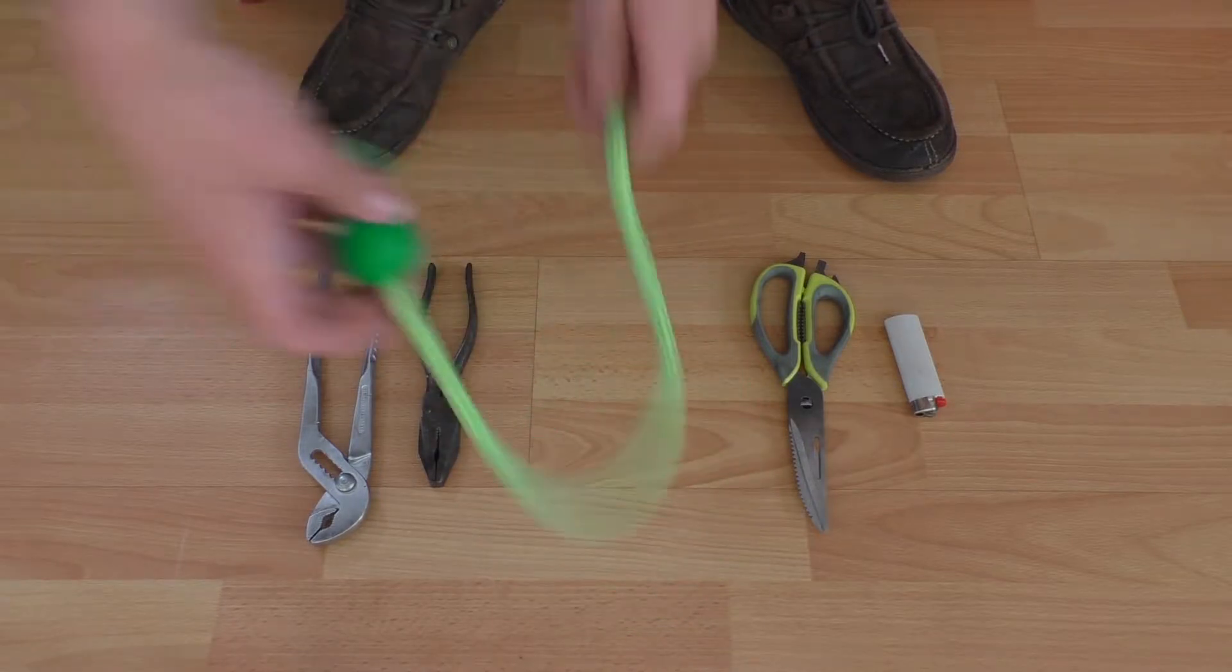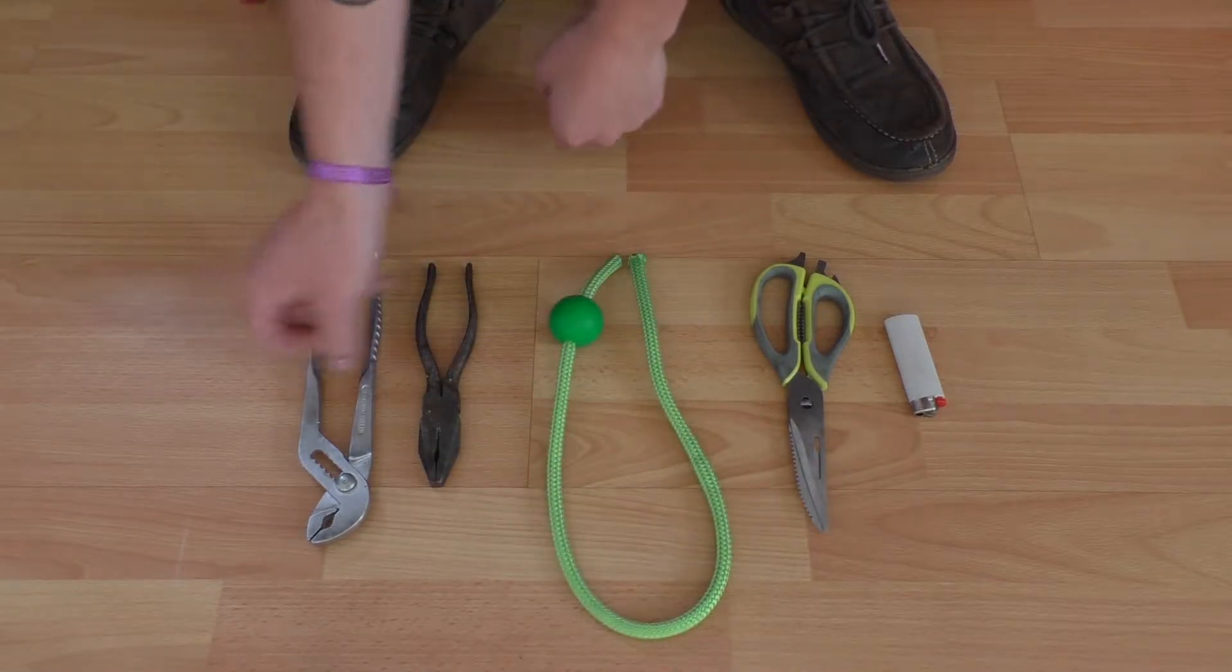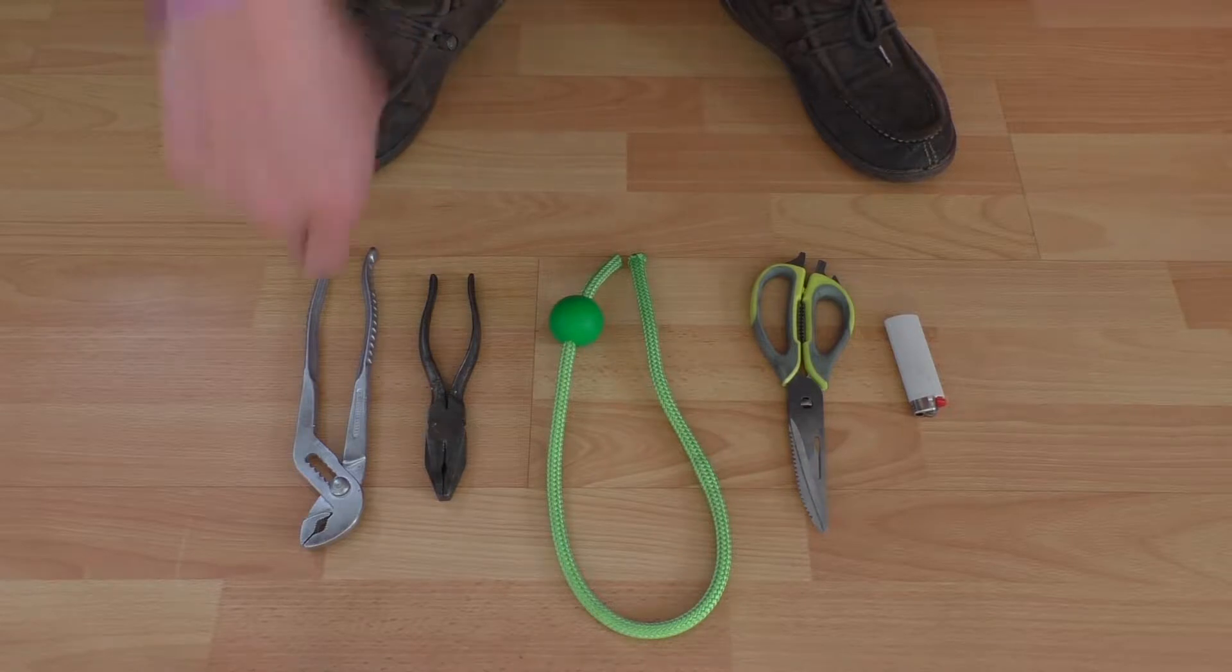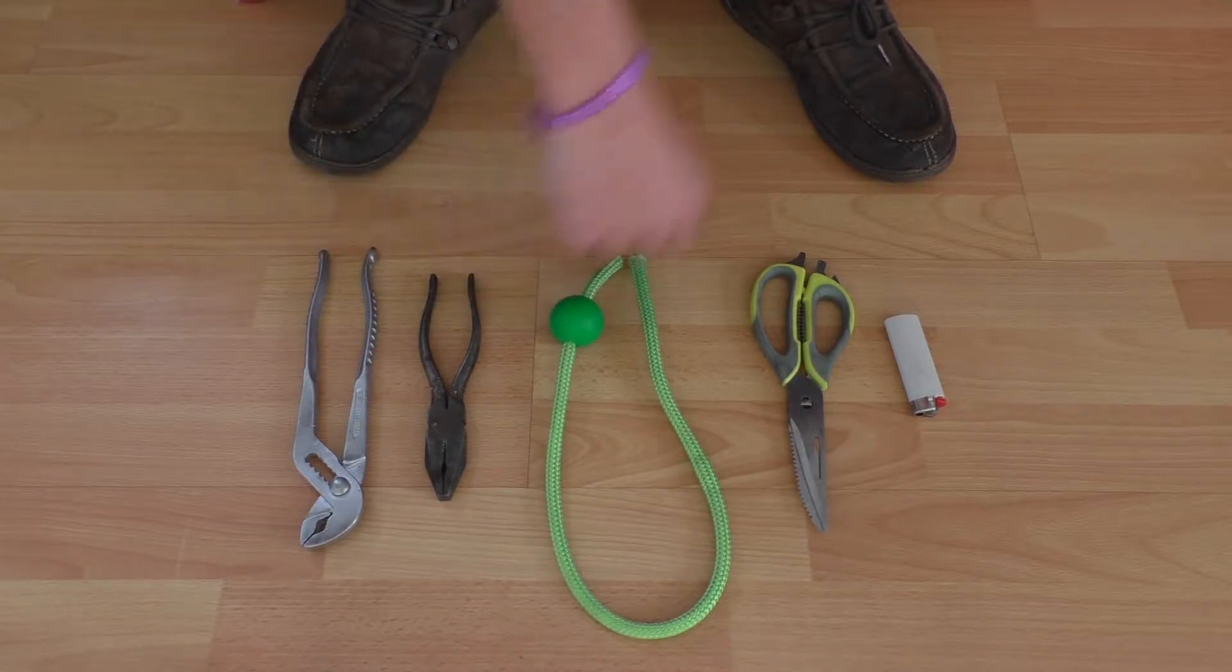First, things you're going to need: some pliers, preferably two pairs of pliers but one pair is also fine. This is just to hold the rope while you cut it. Your poi, preferably both of your poi at the same time so you can make sure that they are the same length.